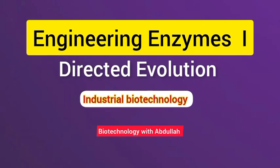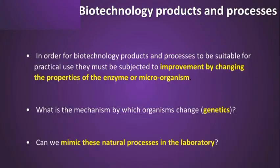In this module, module 5, we're going to look at how enzymes are engineered using a process called directed evolution. In order for enzymes to be used in practical applications in industry, it's necessary to take them from nature and improve them so that they are more stable, more robust, or more catalytically active. We need to understand how this process happens both naturally and in the laboratory — the mechanism by which organisms change, related to genetics, and how we can mimic these processes in the laboratory to engineer and evolve new enzymes.